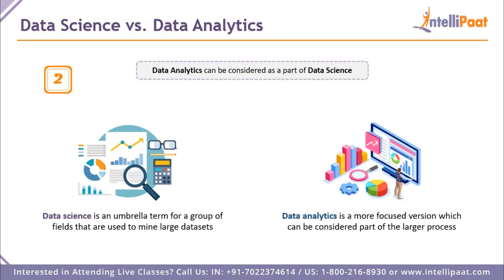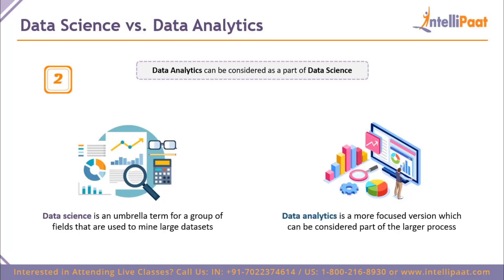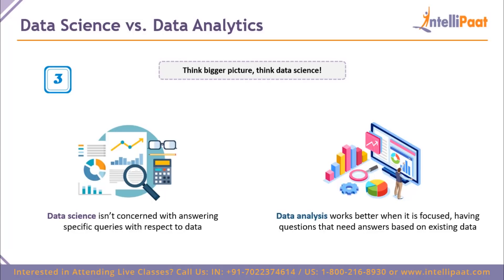Data science is a complete umbrella term for a group of fields used to mine large data sets and drive meaningful insights from them. Data analytics, on the other hand, is a more focused version — it is a larger part of the entire process, where the data collected by data scientists is used by the analytics team for visualizations, analyzing trends, and more. Data science isn't concerned with answering any specific queries on a specific data set; it works with a very wide scope. Data analytics works extremely well when you have a small, focused scope and know the questions that need to be answered from the existing data.